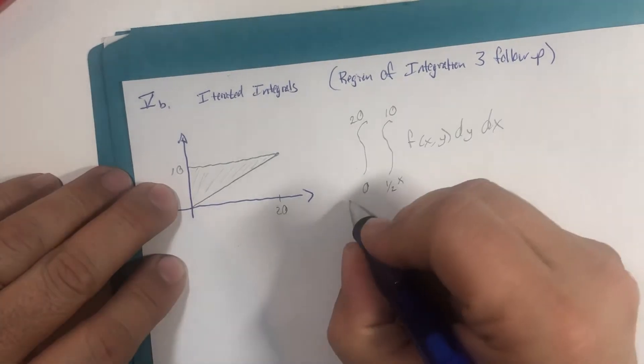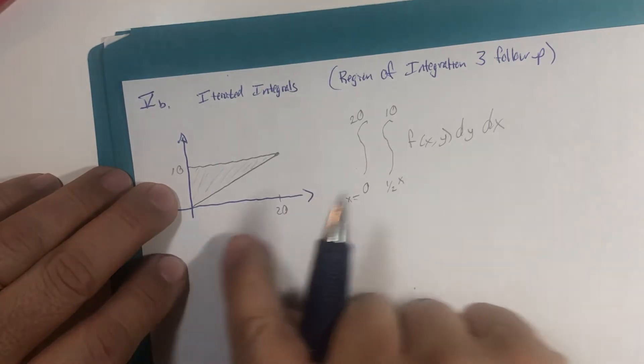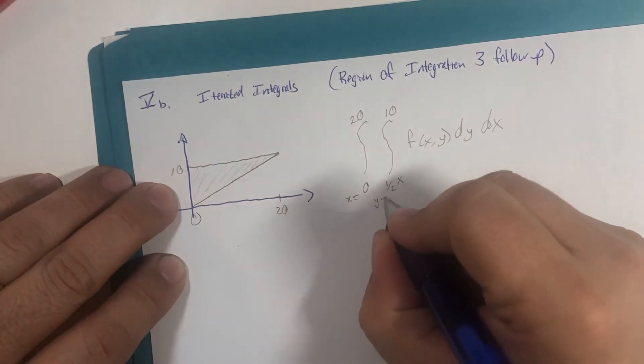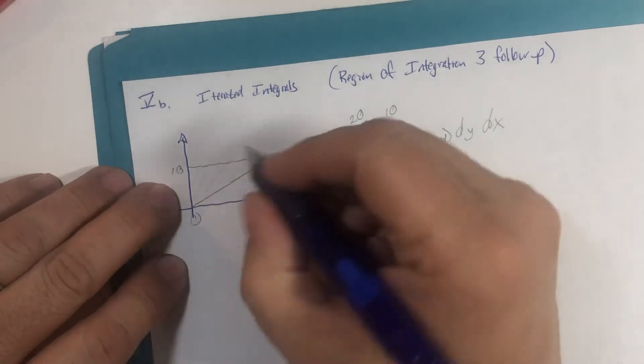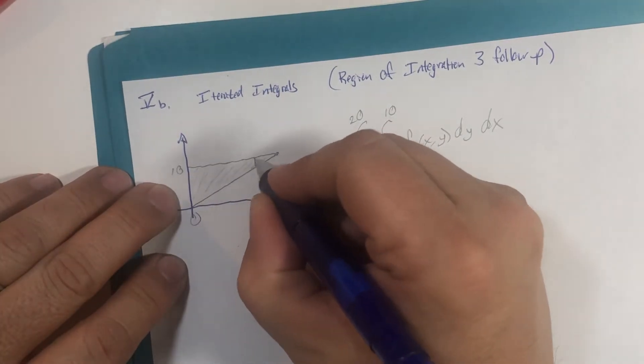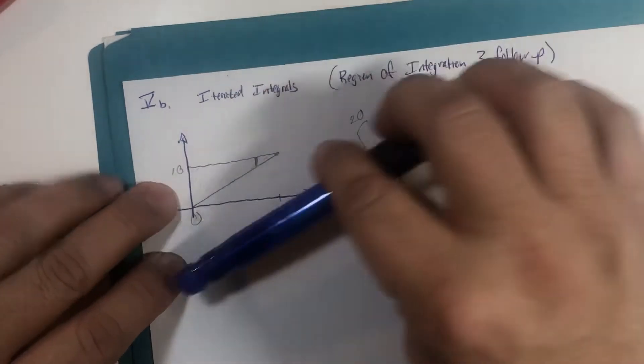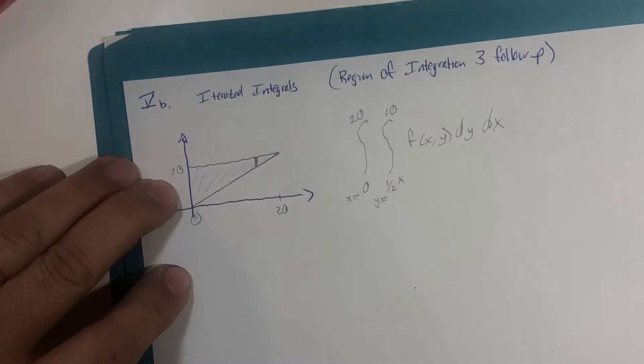And from left to right, our x equals boundaries went from 0 to 20. And the y equals boundaries went from this line to the top boundary of y equals 10. y equals 10 being constant and the line varying in its y values.